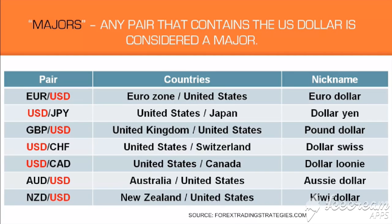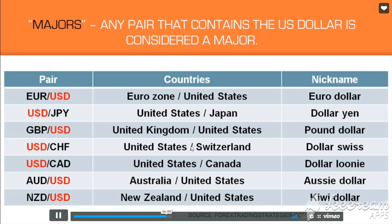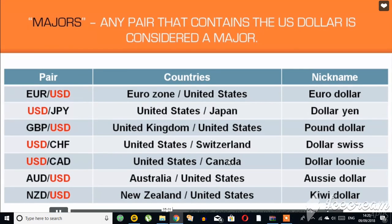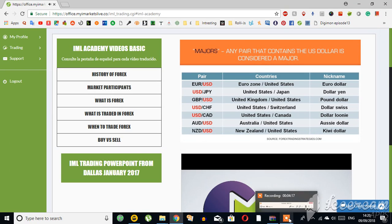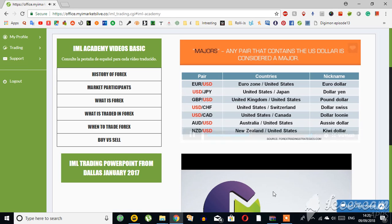Something else to take note of is the nickname. Occasionally in chats or in passing, you'll hear people refer to them as the Euro-dollar, the pound-yen, the Swiss-yen, or the Kiwi. The Kiwi refers to the New Zealand dollar — if someone says they're trading the Kiwi, they're talking about the New Zealand dollar. There's also the Swissy and the Loonie. These are just different slang terms and nicknames people use, at least in English.